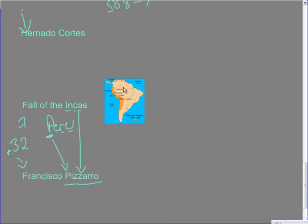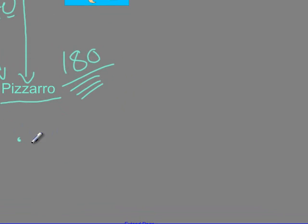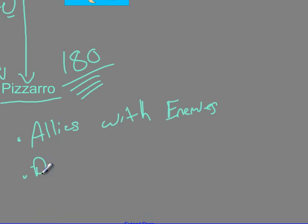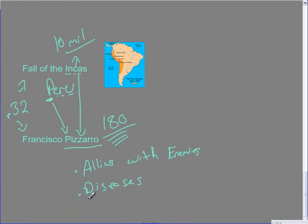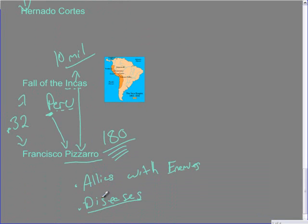What allowed the Spanish to conquer these vast empires so easily? Francisco Pizarro came in with only 180 people, and Cortés had only 508 — yet the Incas had 10 million people. Three key reasons: first, the Spanish made allies with enemies of the Aztecs and Incas; second, European diseases had a huge impact on the Native American population; and third, the Spanish were rather brutal to these people.